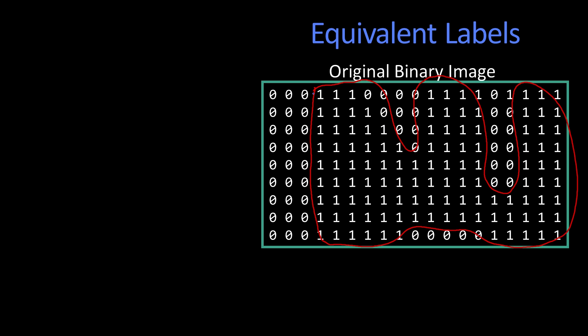And what we want to do is eventually determine that all of them should be labeled as a one. But the system doesn't know this yet. All it knows is that there are zeros and ones in the pixels.